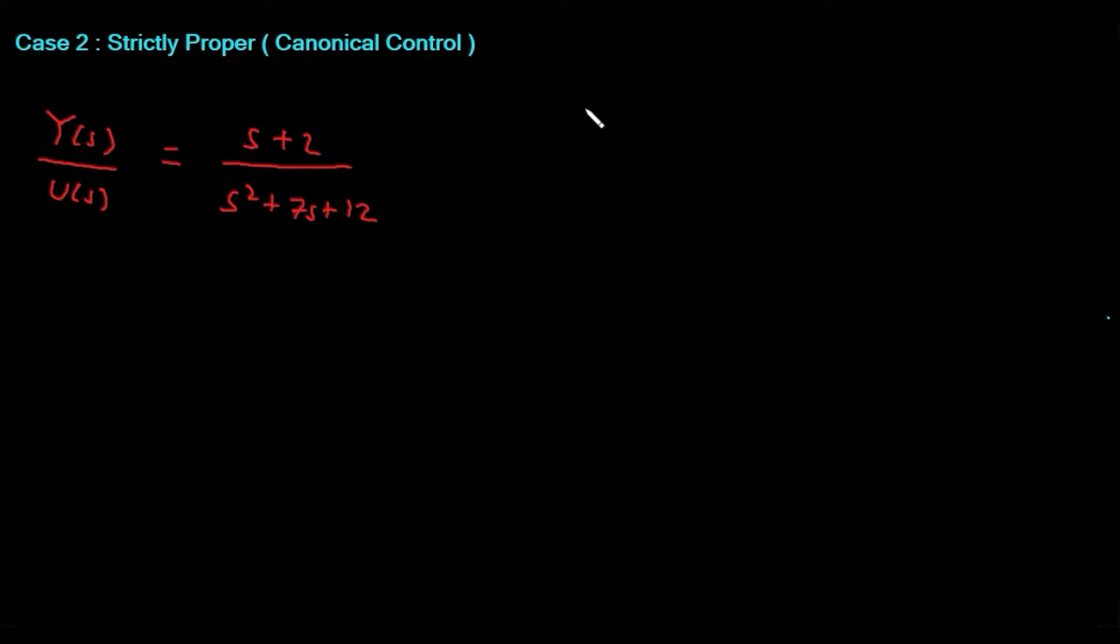Let me rewrite the general form. We know that the transfer function is the ratio between output and input. The output is the numerator N(s), the input is the denominator D(s), equal to Y(s)/U(s). This is the general form of the transfer function.